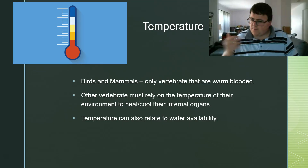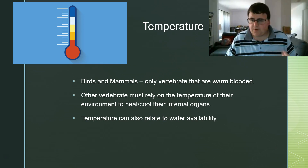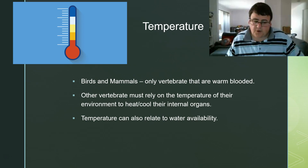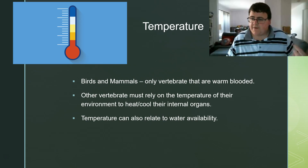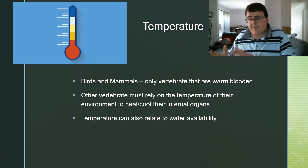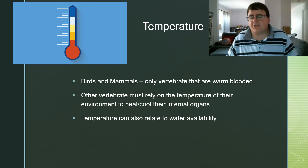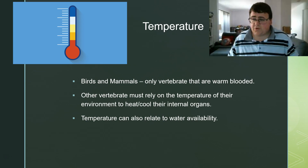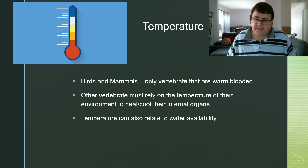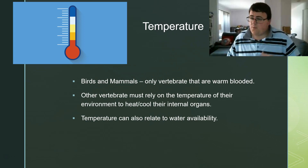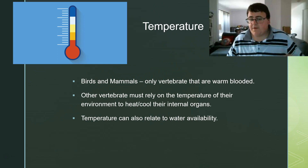Temperature. When we looked at classification, we noted that birds and mammals were the only vertebrates that were warm-blooded — everything else was cold-blooded and relied on their external environment for body temperature. Therefore fish, amphibians, and reptiles have to rely on the temperature of their environment to heat and cool their internal organs, so they can only find habitats where the temperature is suitable. Temperature also relates to water availability — even warm-blooded animals can't go somewhere too hot because they need external water to survive. If the temperature is too high, water evaporates; if too cold, it freezes. So organisms need optimum temperatures, whether for water availability or for sustaining efficient metabolism.